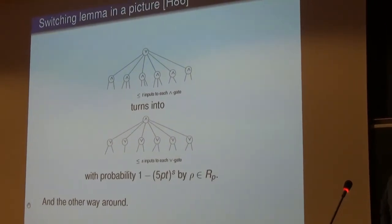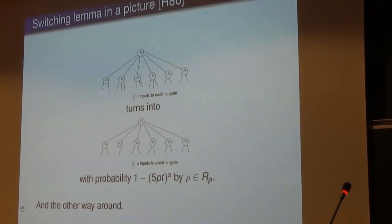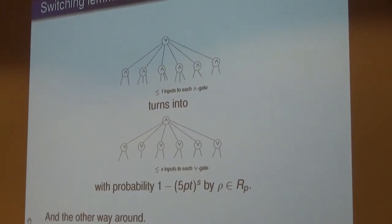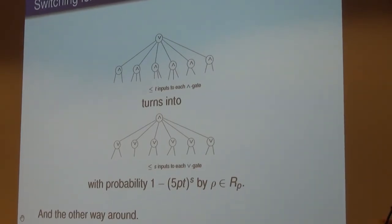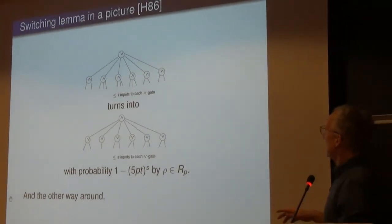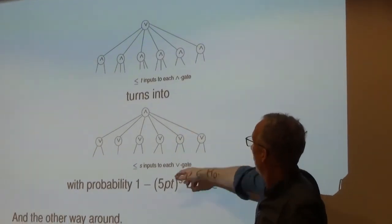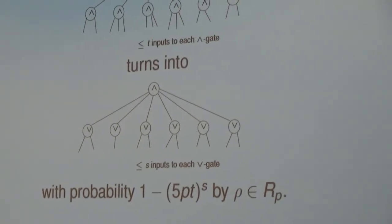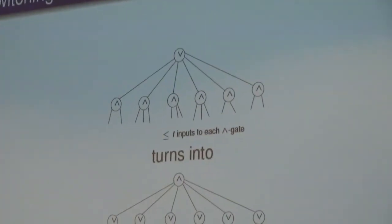Now the switching lemma: any function can be written as AND-of-ORs or OR-of-ANDs, but what's small in one representation might be exponentially large in the other. What the switching lemma tells you is that if you simultaneously set most of the variables, it's very likely you can keep the representation small after the switch. Formally: starting with bottom fanin T, the probability of failing to convert to a representation with bottom fanin S is at most 5 * (p*T)^S.